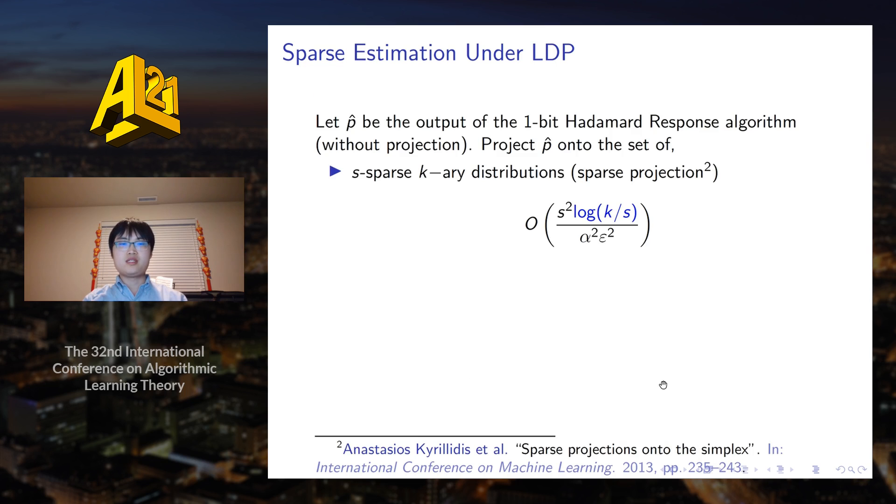Once an estimate p hat is obtained, we need a final projection step to make it a valid distribution. We show in our work that if we project onto the sets of all S-sparse distributions, we can obtain the sample complexity as we desire. Note that sparse projection can be done efficiently using an algorithm from the paper by Kirolidis et al.